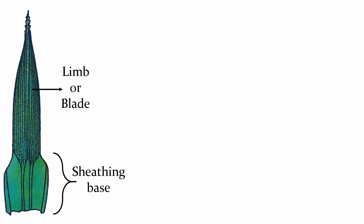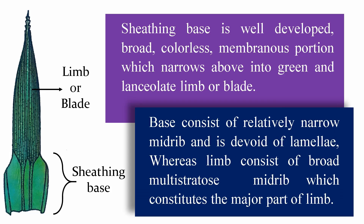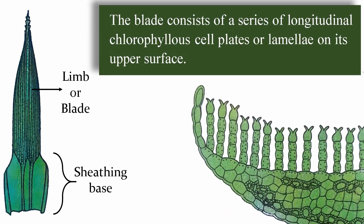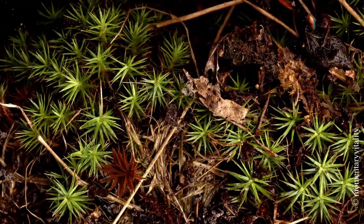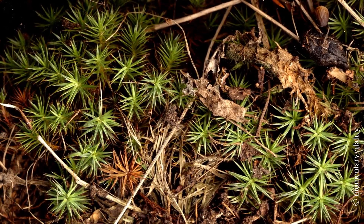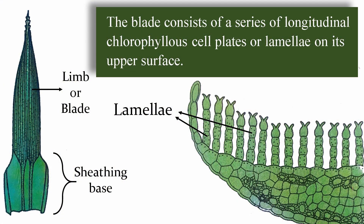The sheathing base is well developed, broad, colorless, membranous portion which narrows above into a green and lanceolate limb or blade. The base consists of a relatively narrow midrib and is devoid of lamellae — that means the sheathing base doesn't contain any lamellae. Whereas the limb consists of a broad, multi-stratose midrib which constitutes the major portion of the limb. The blade consists of a series of longitudinal chlorophyllous cell plates or lamellae on its upper side. Foliage leaves of Polytrichum commune close as they enter the dormant stage and readily open as the right conditions arrive. Hence, the closing mechanism of foliage leaves may serve Polytrichum commune to perennate unfavorable dry conditions.